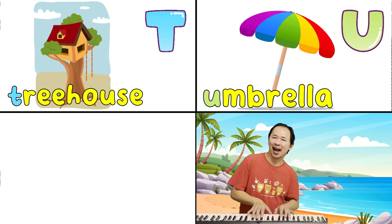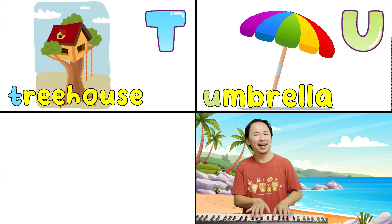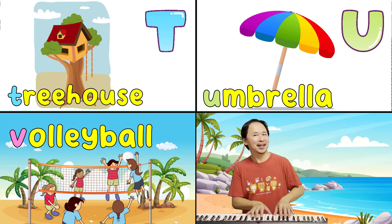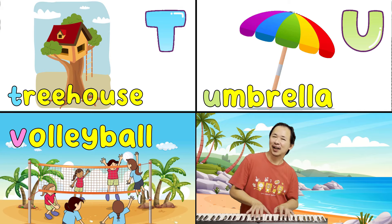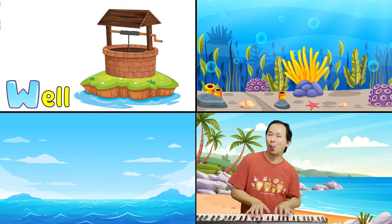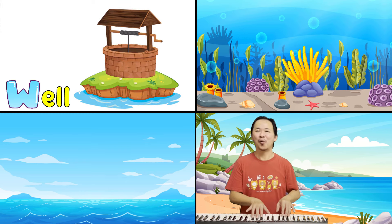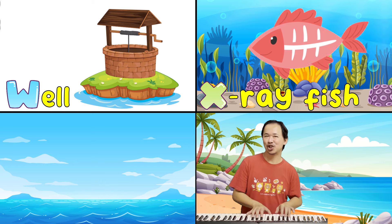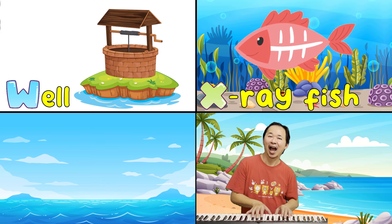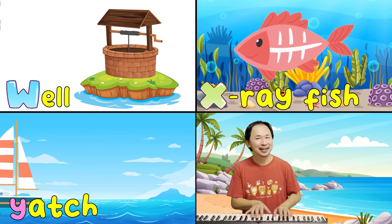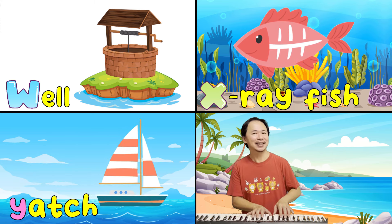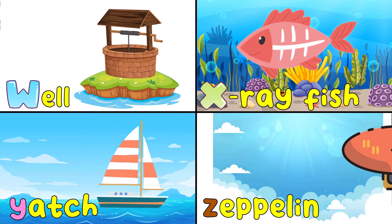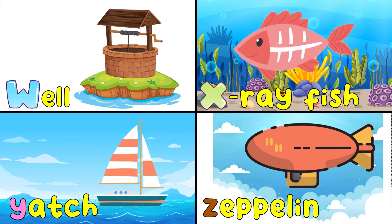U is for Umbrella. a. V is for Volleyball. v. W is for Whale. w. X is for X-Ray Fish. x. Y is for Yacht. y. Z is for Zeppelin. z.